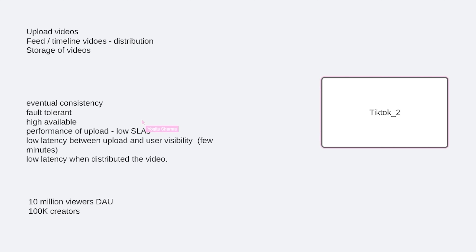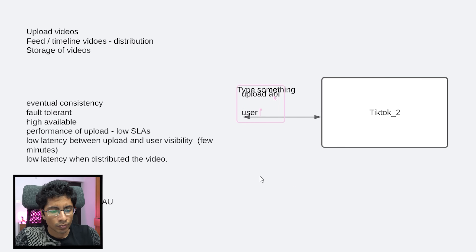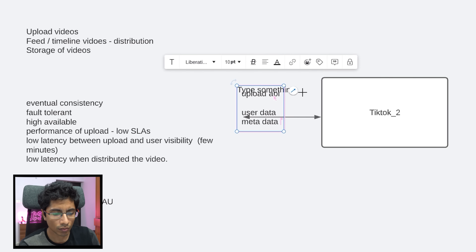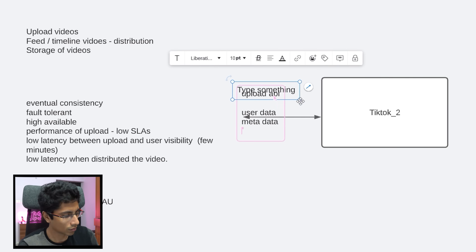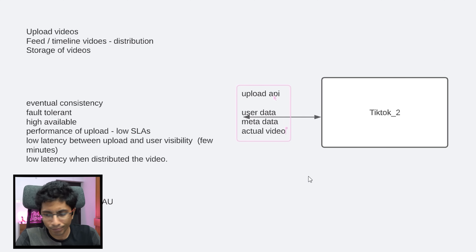The upload API is going to take some user data like user ID and login, some metadata about the video, and the actual video file. One clarifying question I have here: would we only allow videos of length 60 seconds, or do we want to allow larger videos as well?